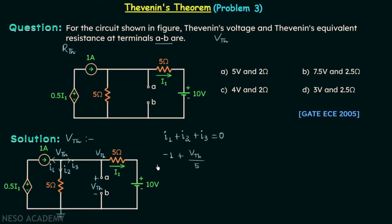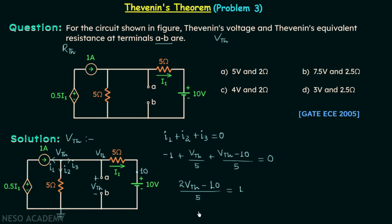To find I3, we first mark the potential at the voltage source node as ten volts. Therefore I3 equals Vth minus ten divided by five. Substituting into the KCL equation and simplifying, we get two times Vth minus ten divided by five equal to one, giving two times Vth equal to fifteen, and therefore Vth equals 15 divided by 2, which is 7.5 volts.